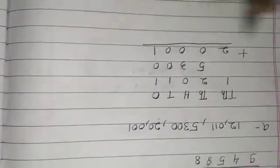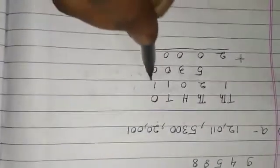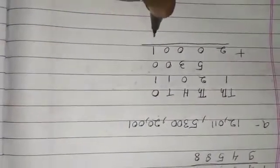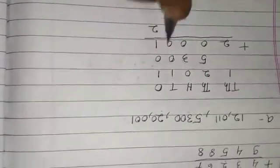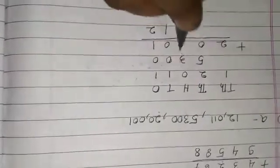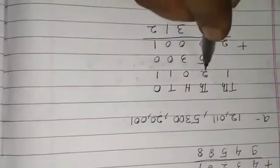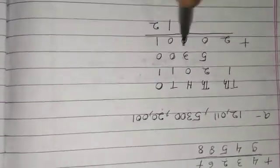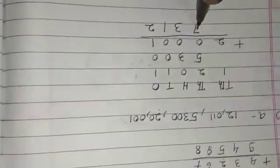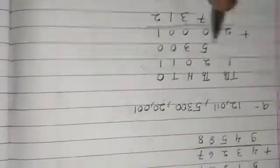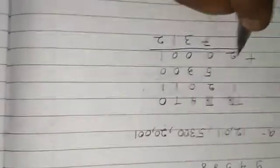You add this. 1 place, 1 plus 1 is equal to 2. In 10 place, I have only 1. In 100 place, I have only 3. In 1000 place, I have 2 plus 5 is equal to 7. And in 10,000 place, I have 1 plus 2 is equal to 3.